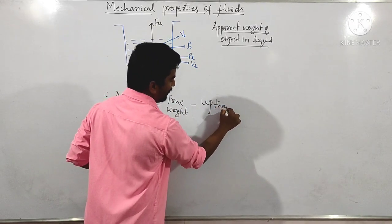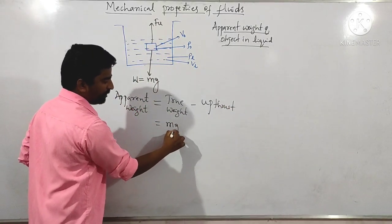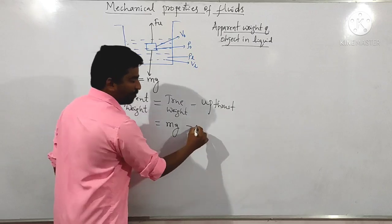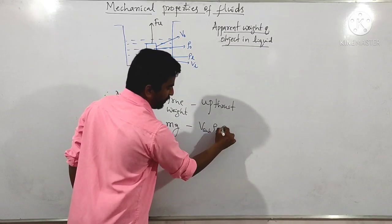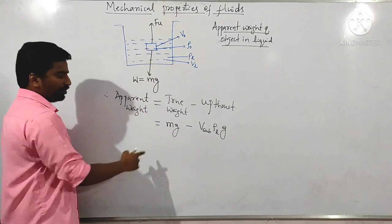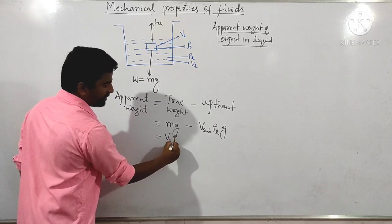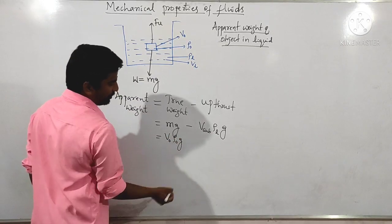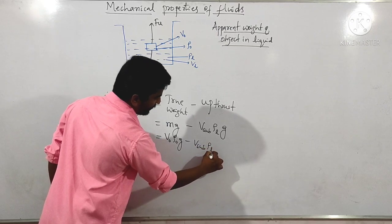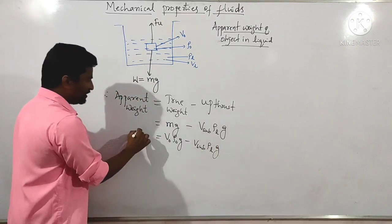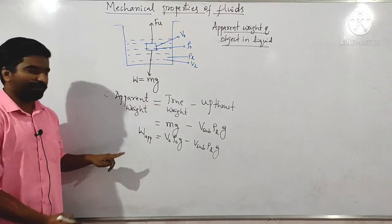Upthrust is also called buoyant force. True weight is m×g. Upthrust equals volume of the liquid submerged multiplied by density of the liquid multiplied by g. True weight can also be written as volume of the object multiplied by density of the object multiplied by g. This gives the apparent weight of the object in liquid.